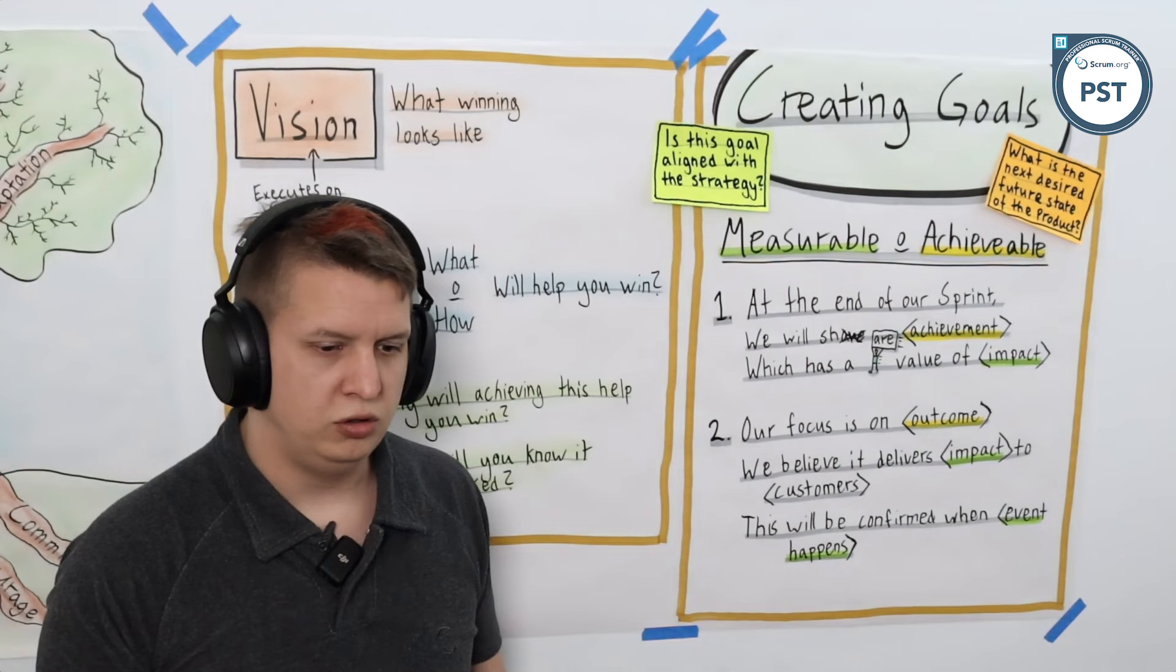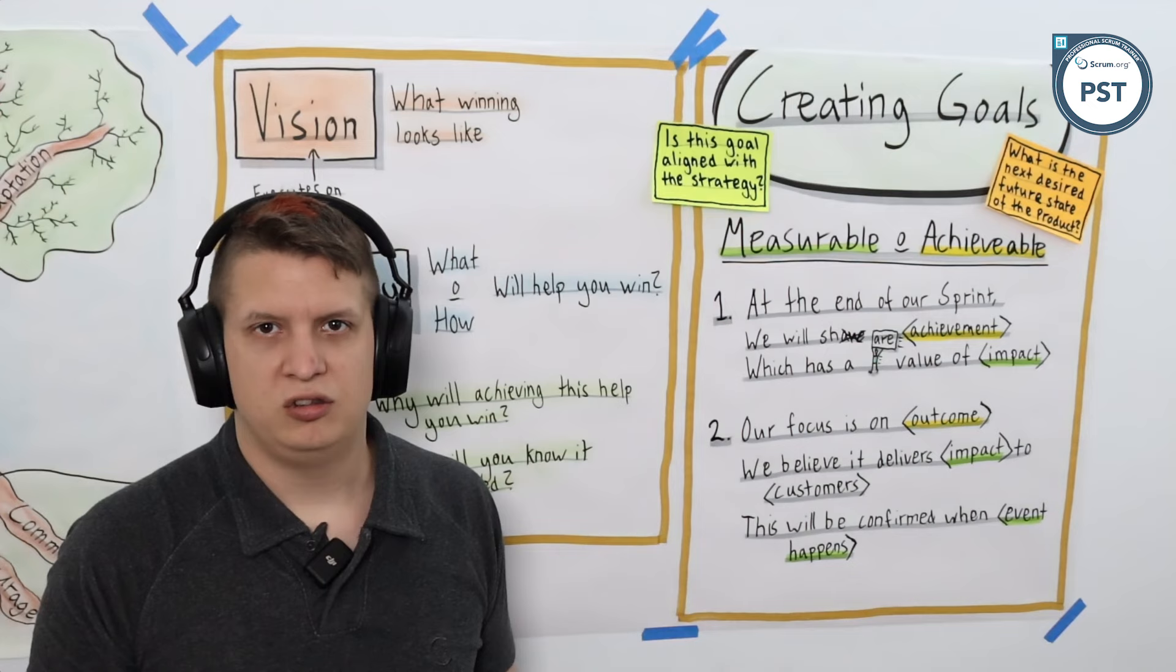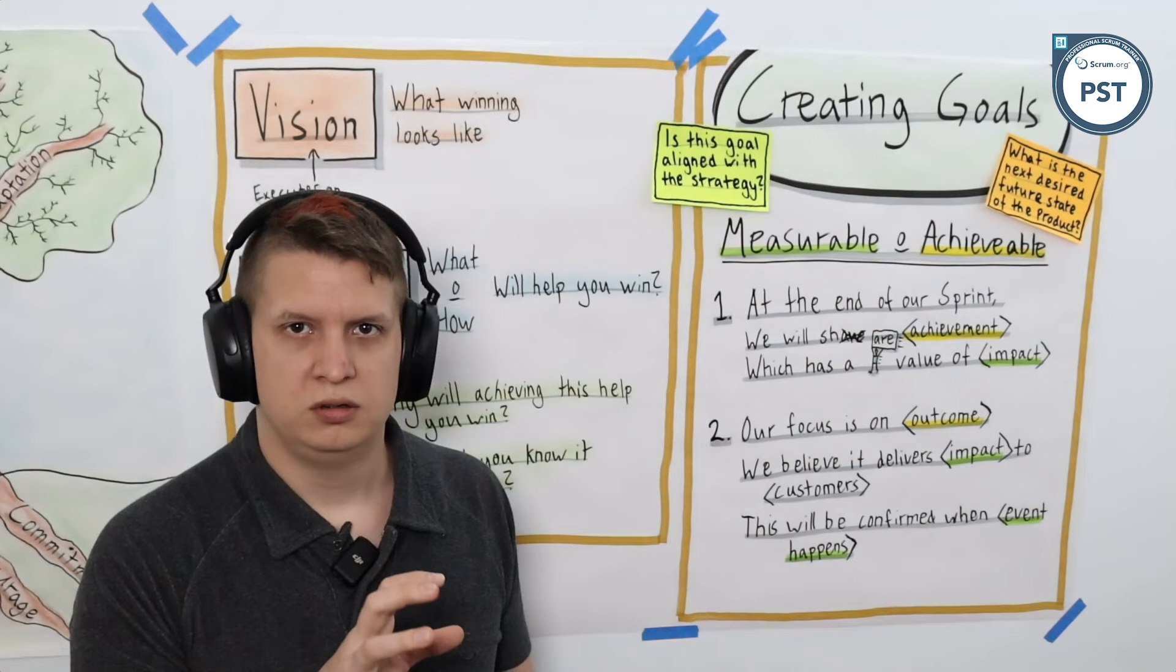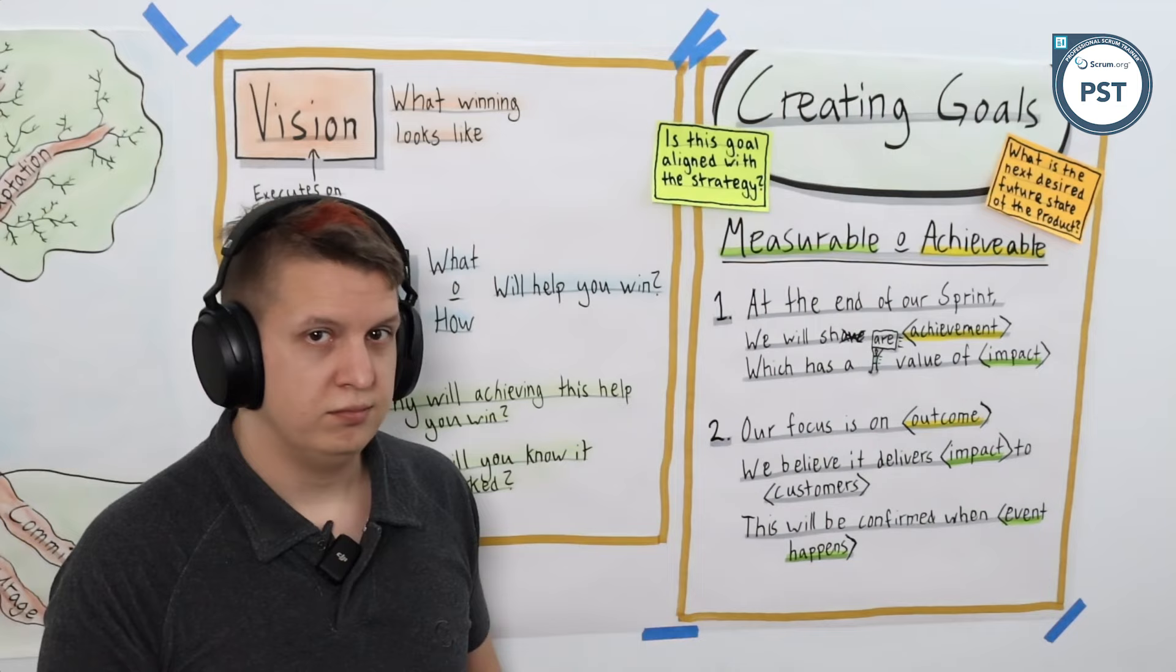The next one is pretty straightforward. What is the next desired future state of the product? Is often used because it's kind of the definition of the product goal. But I even like it at a sprint goal level because, well, what is the next smaller iteration of the sprint going to get us to in terms of the state of the product?